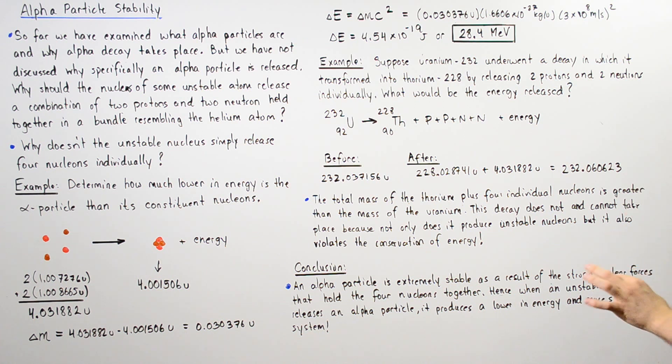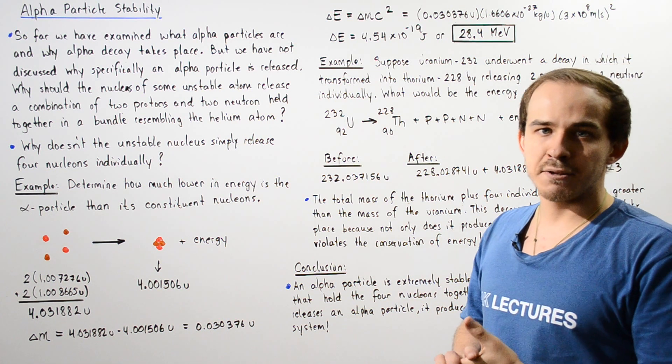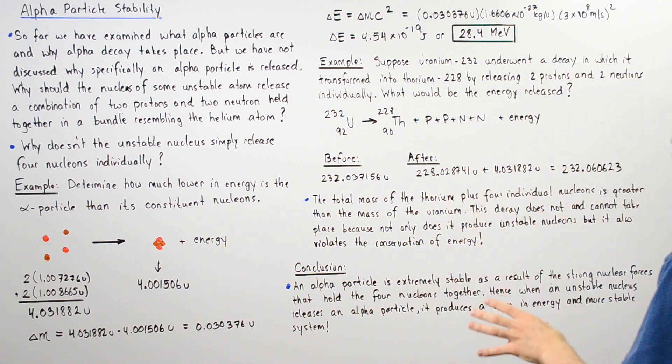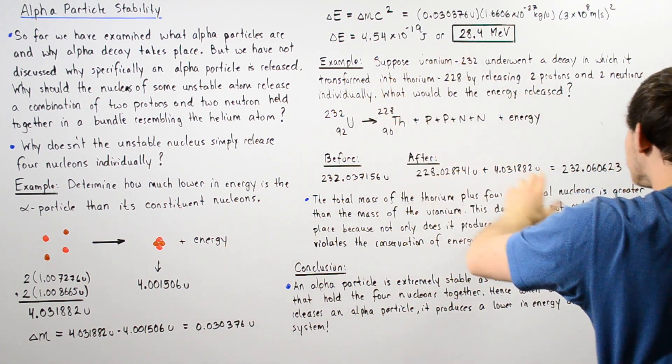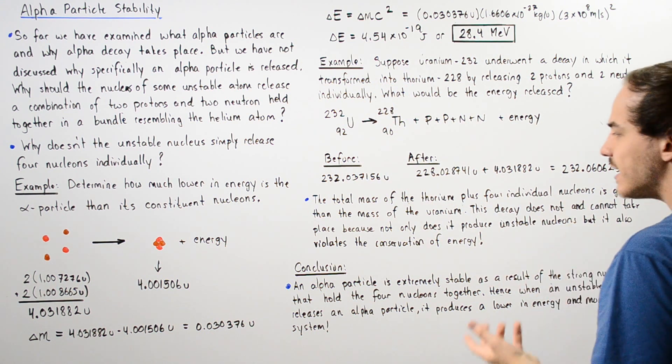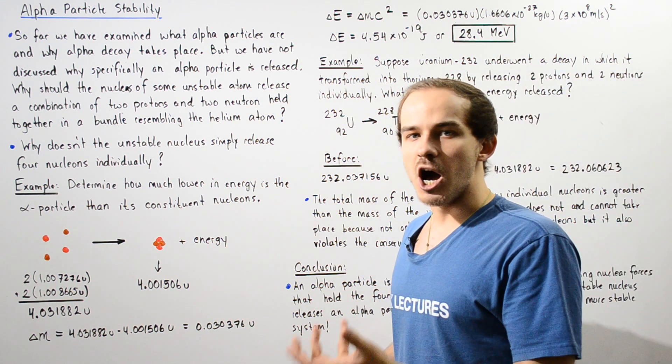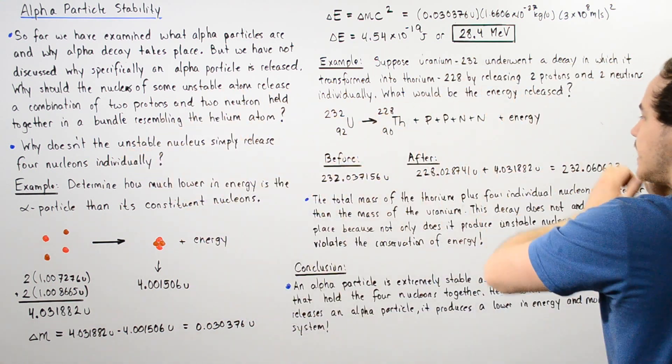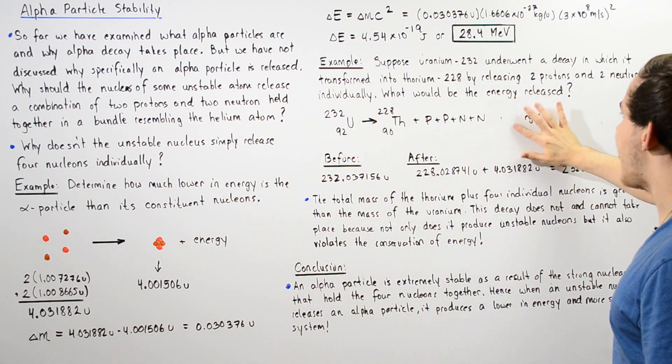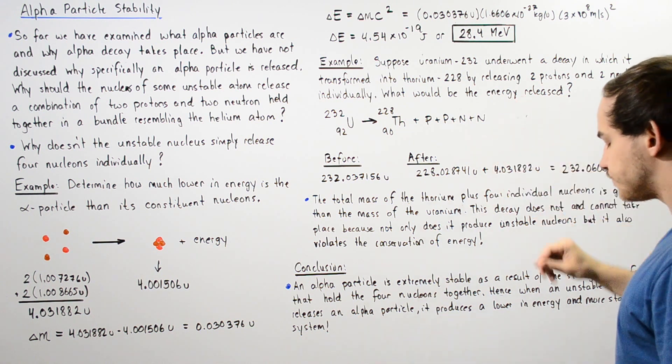Now, this type of decay does not readily take place and cannot readily take place because not only does it produce an unstable bunch of nucleons, but it also violates the conservation of energy. So we have less energy in the beginning than at the end. So we have no energy released at the end.